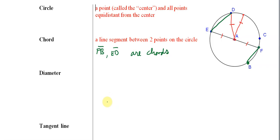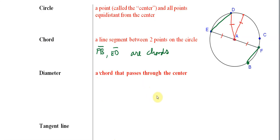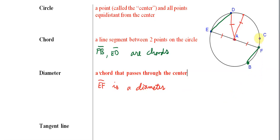A diameter is just a special case — it's a special type of chord. It is a chord that passes through the center. In our example, there's one diameter shown here, which is E to F. So EF is a diameter. There are several others we could also construct — for example, a line from C through the center to the other side would also produce a diameter.